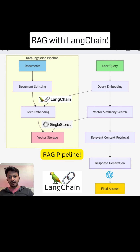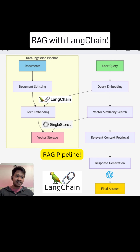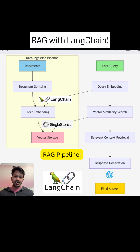In RAG retrieval augmented generation, you basically augment your custom data in your AI application so that your LLM doesn't wander around and start hallucinating. You give and attach the custom data you want — whether it's a PDF file or a lot of custom documents. As you can see in the image, there is a data ingestion pipeline where your custom documents go in, get split, and embeddings are generated using an embedding model. All these embeddings are then stored in a vector storage or vector database like SingleStore.